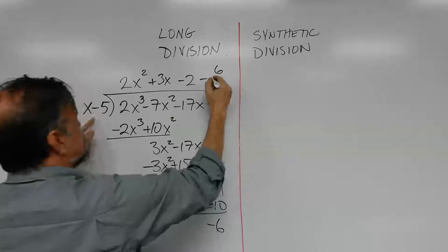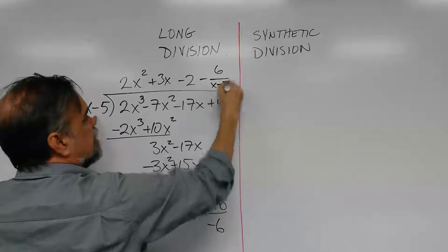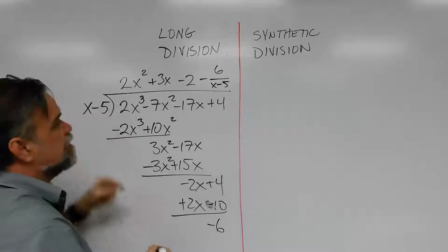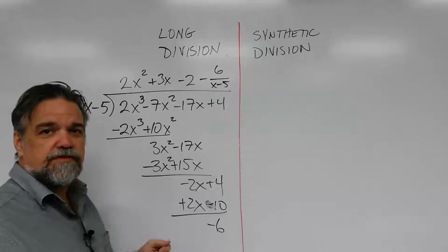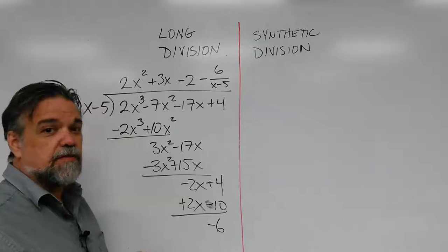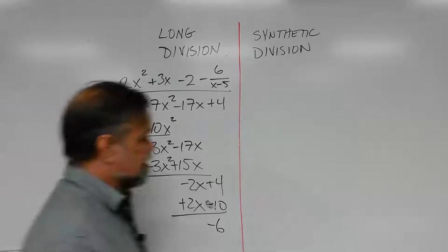So that's minus 6 over x minus 5. I put my remainder. I express it as a fraction. That's how we do long division. So now let me show you how to do synthetic division because it's so much faster.